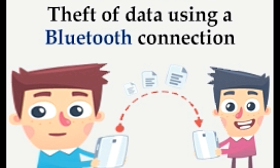Here are a few scenarios which indicate that a person has been Bluesnarfed. Scenario: A person is standing in a line at the ticket counter. Another person, who happens to be the perpetrator, succeeds in pairing his device with the victim's device which is placed in his bag. He hacks into the victim's phone and downloads his entire contact list, modifies the contact numbers, and replaces the old contact list with a new, modified one.